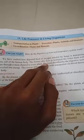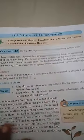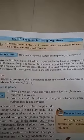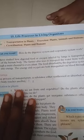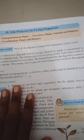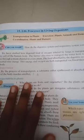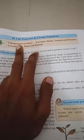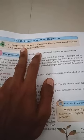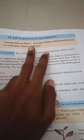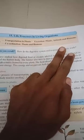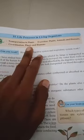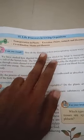Children, we have already studied the basics from last year — how the digestive and respiratory systems work in our body. Now we are going to cover transportation in plants, how plants transport food, how plants and animals secrete, and the coordination between plants and humans.